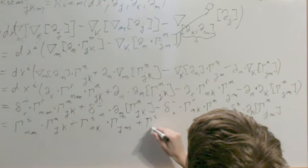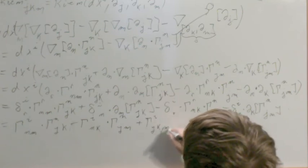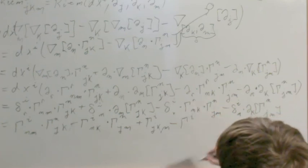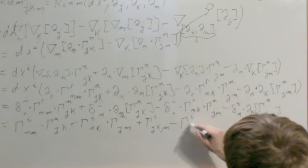And plus gamma, that N goes to an I, J, K, comma M, and minus gamma, that's also an I, J, M, comma K.